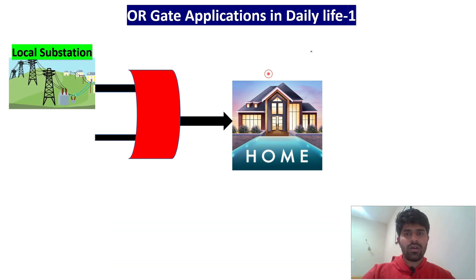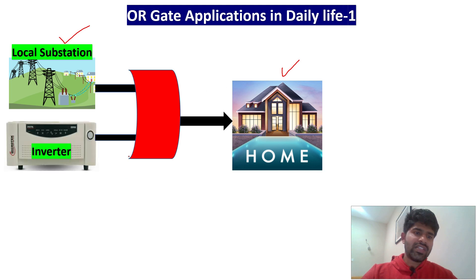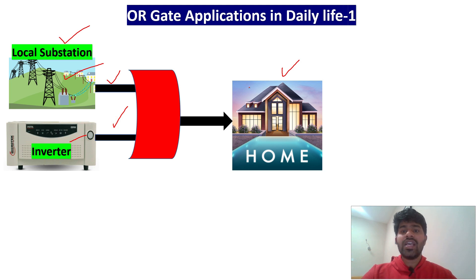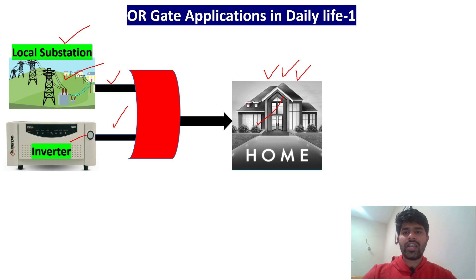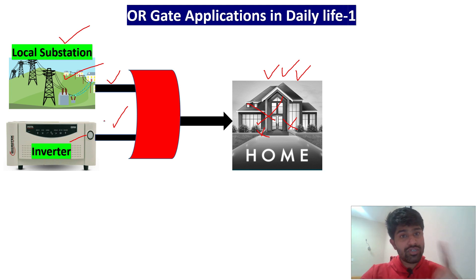Let's apply OR gate in your home. There are two chances where we get power supply: one is from the local substation — if power is there, your home will be lit. Otherwise, if power has gone and we have an inverter and battery, you can light up. So if any one power supply is there — either from the inverter or substation — you will have power in the home. If both are not there, your lights and fridge will go off. That is where we apply the OR gate — daily you are using logic gates.